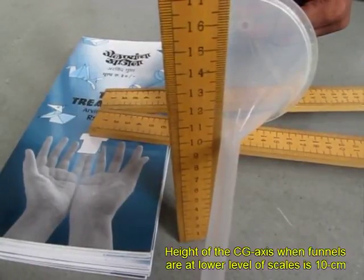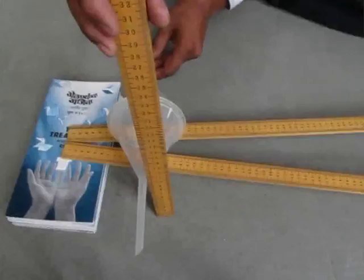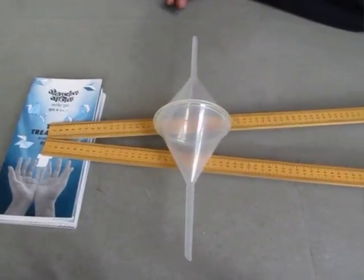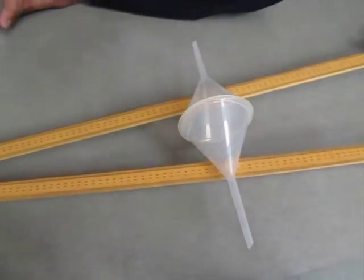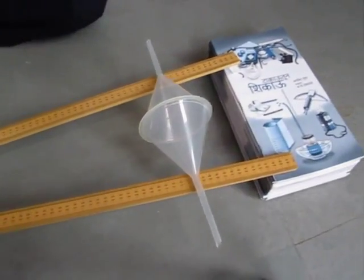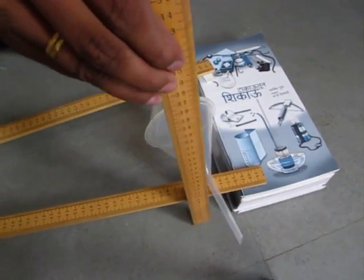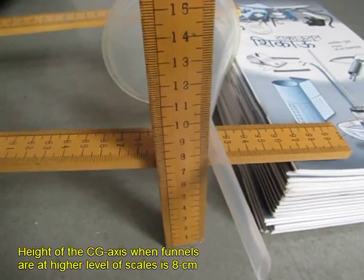This is because the center of gravity of all the funnel pairs is higher than the level of the meter scales. So there is stored potential energy which dissipates into kinetic energy. Over here the center of gravity is much lower.